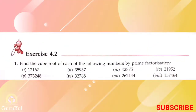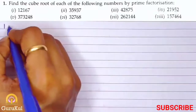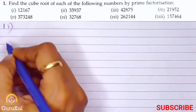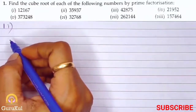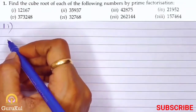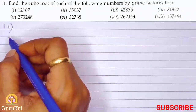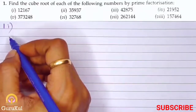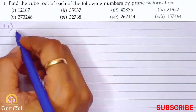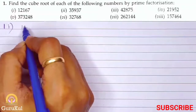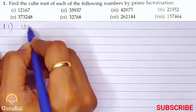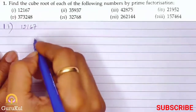Today I am going to start with Part 1 of Exercise 4.2. Question number 1, the first part — we need to find the cube root of each of the following numbers by prime factorization. The first number is 12,167.